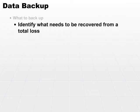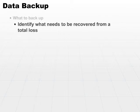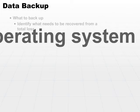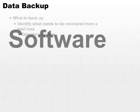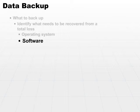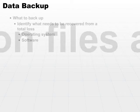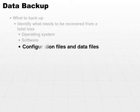The answer may be a little bit more than you thought. First off, you have to have the operating system installed on the second machine, you have to have the software installed on the second machine, and then all configuration files and data files. Identify these data files that may change and make sure that you have them backed up frequently enough so that you can recover.